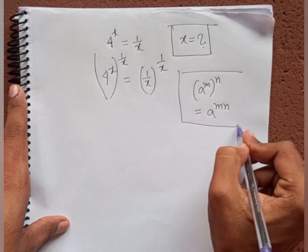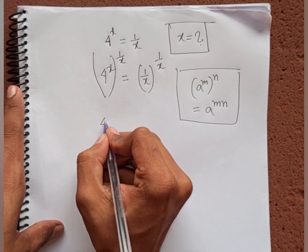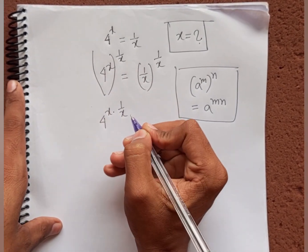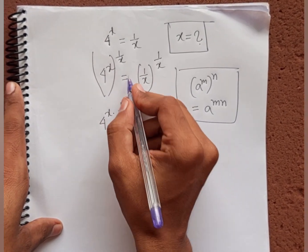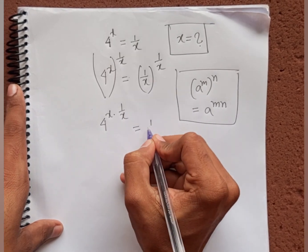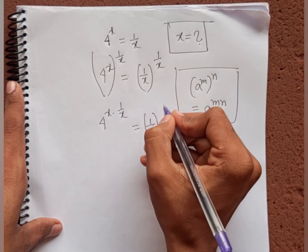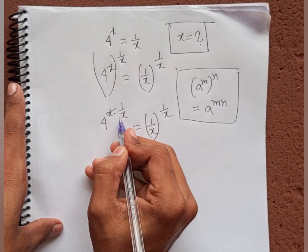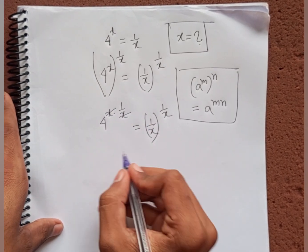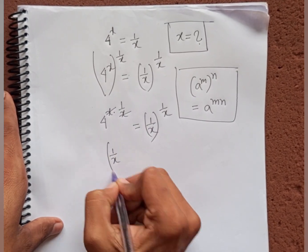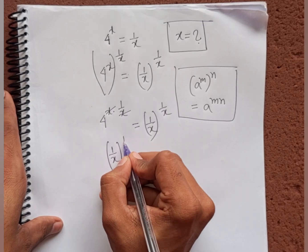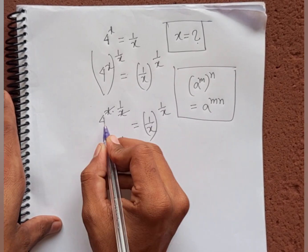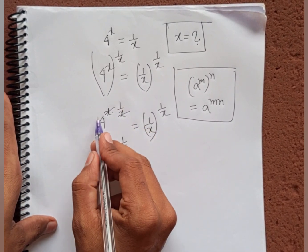According to this rule it becomes 4^(x · 1/x) = (1/x)^(1/x). Now x · (1/x) cancels to 1, so we have 4^1 = (1/x)^(1/x), meaning (1/x)^(1/x) = 4.